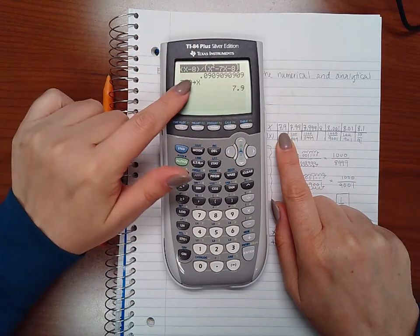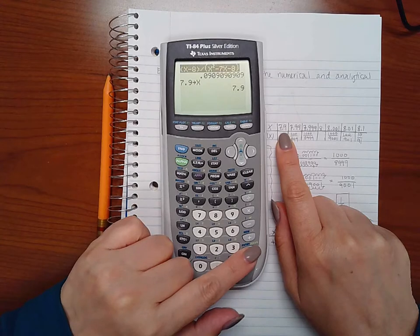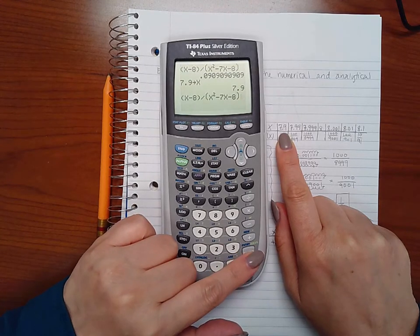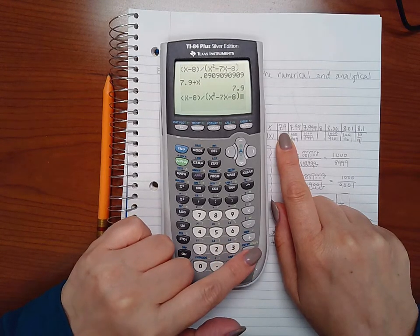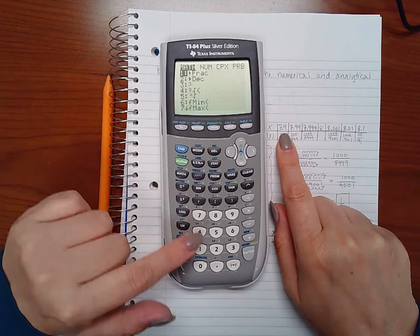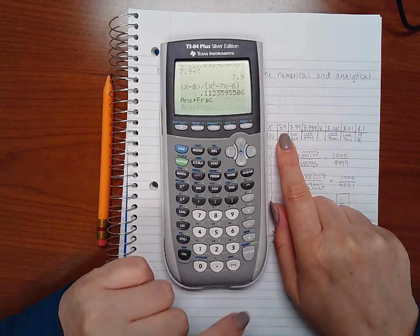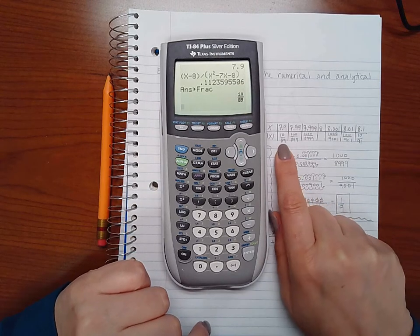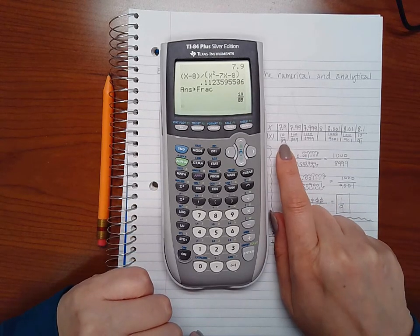If I go back up to that function and hit enter to copy it, if I hit enter again it'll plug in 7.9 and so I'm typing that in there now. Now I'm going to try to convert this to a fraction and yes it is 10 over 89 as I have here on the paper.